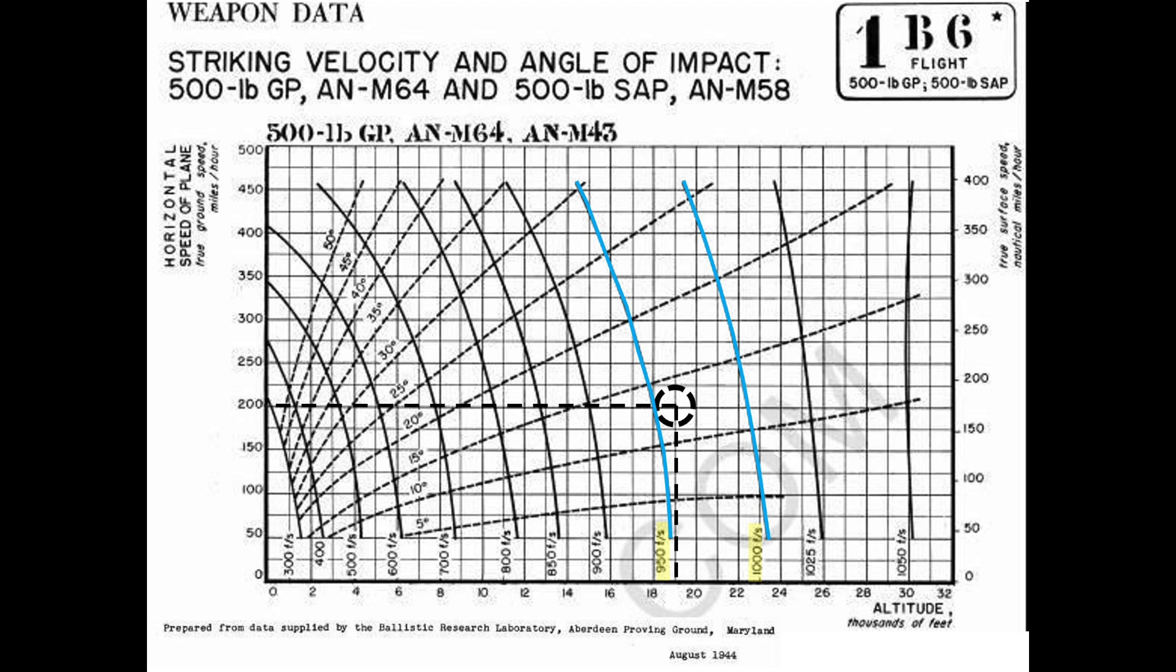Interpolating between the adjacent bomb strike speed curves of 950 and 1,000 feet per second yields a bomb strike speed of 960 feet per second.